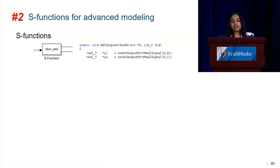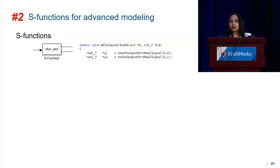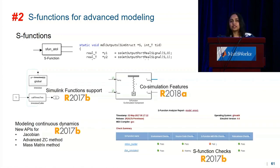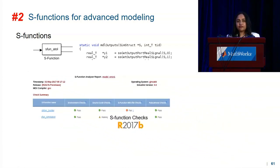The second strategy is to continue to invest in S-functions for advanced modeling. S-functions of course support a rich set of semantics over the history of Simulink, to allow you to advance modeling such as using continuous dynamics, multi-rate systems, Simulink functions, and other paradigms. An example of some recent investments is that we added S-function checks in 17b to catch commonly made mistakes in S-functions, to allow you to write better and more robust S-functions.